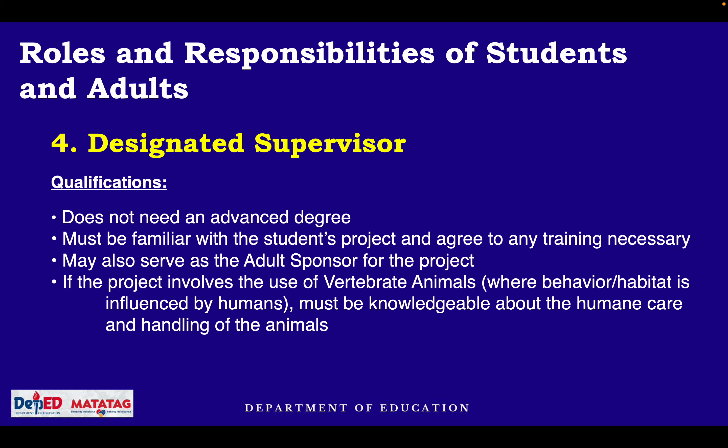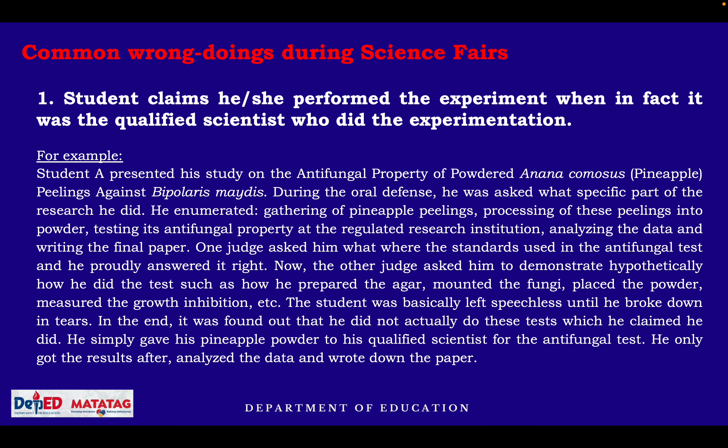Common wrongdoings during the science fair: a student claims she performed the experiment when in fact it was the qualified scientist who did the experimentation. Of course, the student will be the one to perform the experiment — the qualified scientist will just verify the procedure or guide the student, but the student performs it.